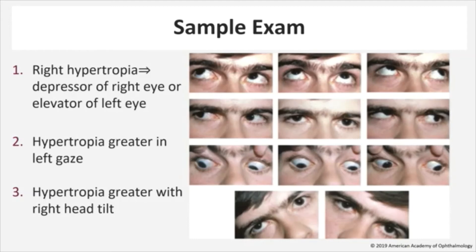The final step of our test allows us to decide which of the two remaining muscles on our differential is nonfunctional. In a right head tilt, the right superior oblique and the right superior rectus work together to incyclotort the right eye. When both muscles are functioning, there should be no vertical movement of the right eye. However, if the superior oblique is paretic, then the right superior rectus will act unopposed, causing the right eye to be hypertrophic relative to the left, which is what we see in our patient on the bottom left photo. Therefore, the paretic muscle is the superior oblique and we can rule out the left superior rectus.